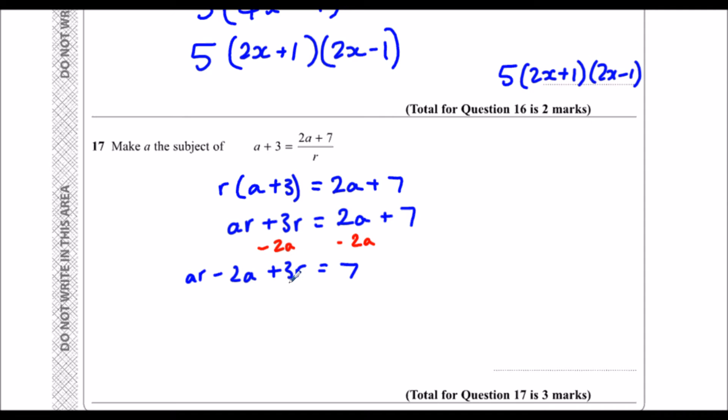And then I've got this 3r here - I want that on the other side so the a's are on the same side. So I take 3r from both sides: ar minus 2a equals 7 minus 3r.